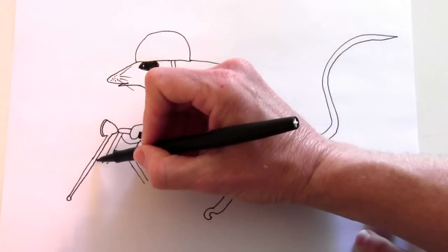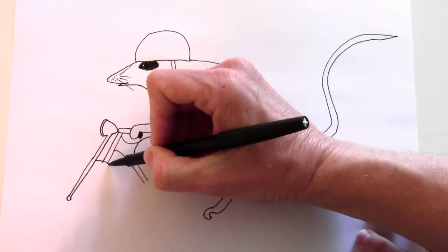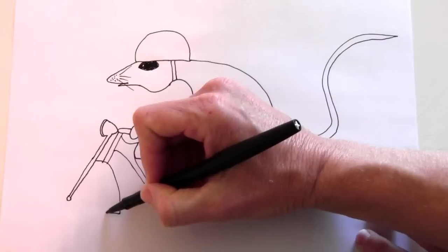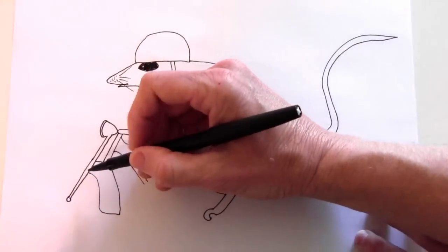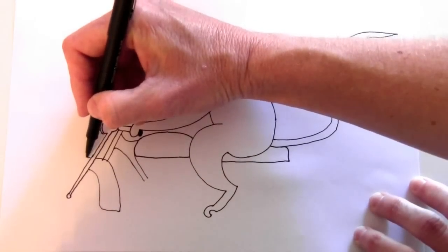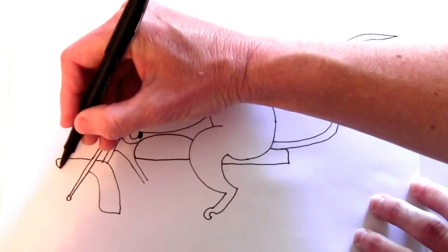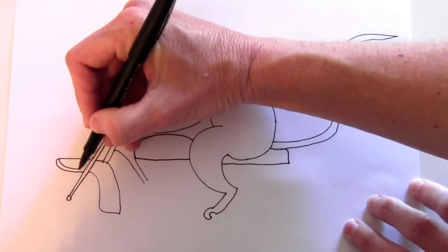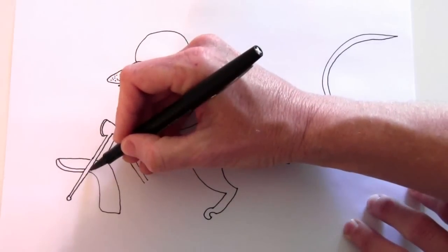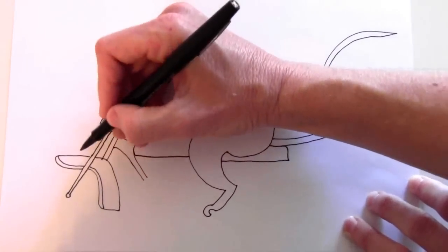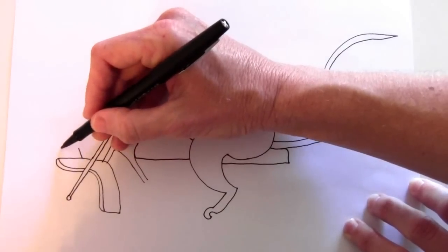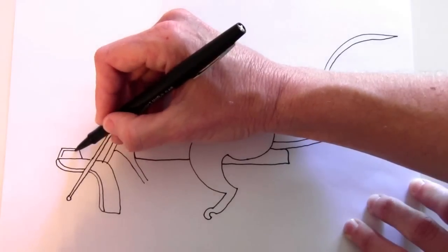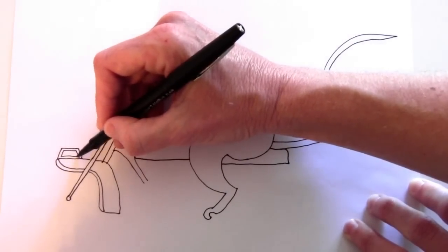We'll draw the front wheel now. This is the fender and it comes out this side. Draw a line here, just the edge of the fender. Draw that shape.